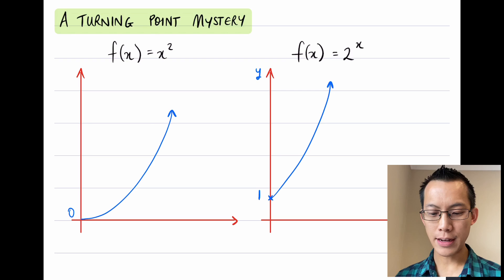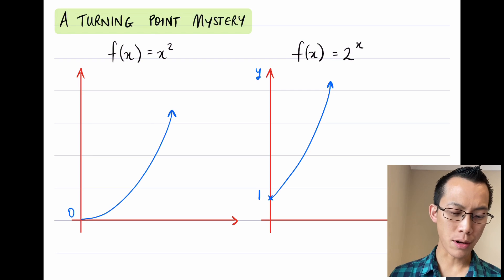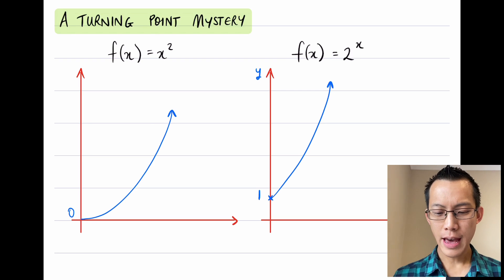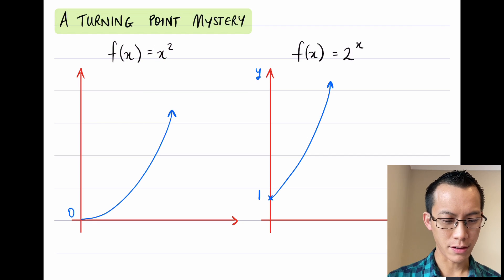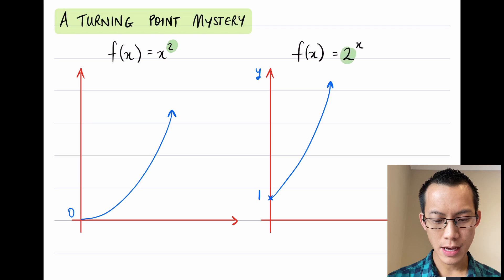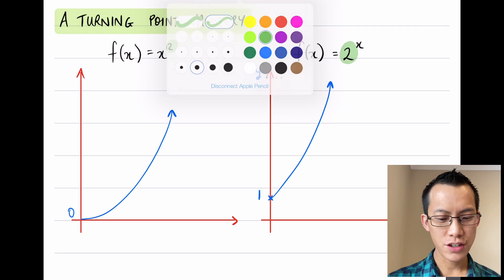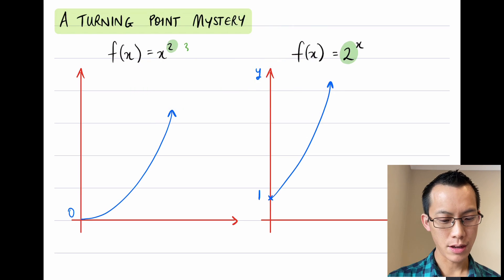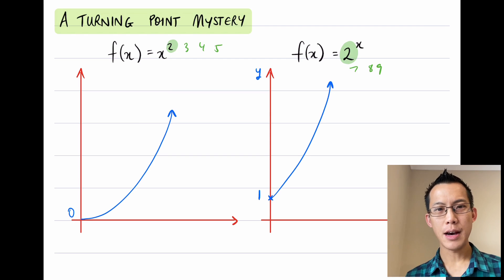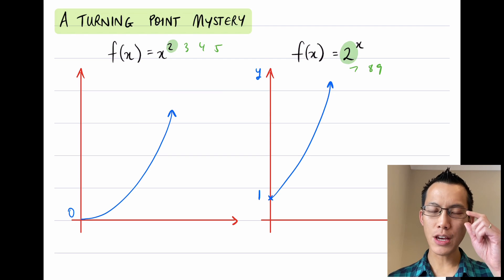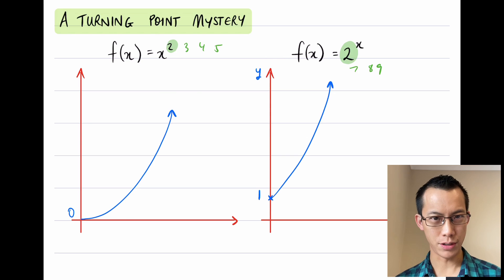If I do that for the quadratic—or I should say polynomial because it won't be a quadratic anymore—and if I do that for the exponential as well and change these numbers here, if I change this number or this number into any other values like 3, 4, 5, or 7, 8, 9, etc., even though the scale will look a bit different, the overall shape is still going to be preserved.